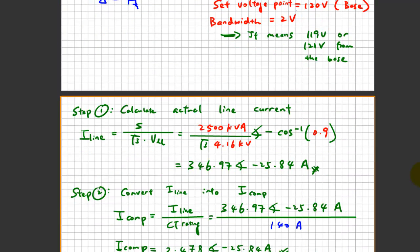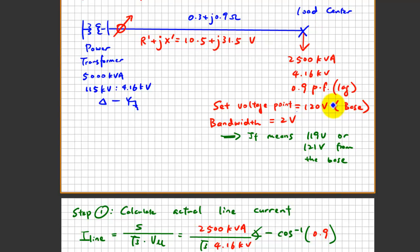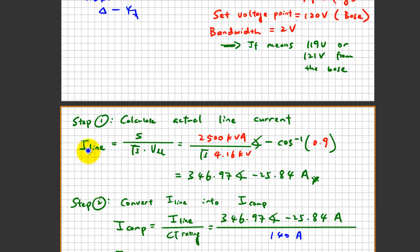The first step is to calculate the actual line current, because we are given the actual measurement at the load center rather than the rated current. The line current is: 2,500 kVA divided by √3 times 4.16 kV times power factor 0.9, giving 346.97 A at an angle of −25.84°.